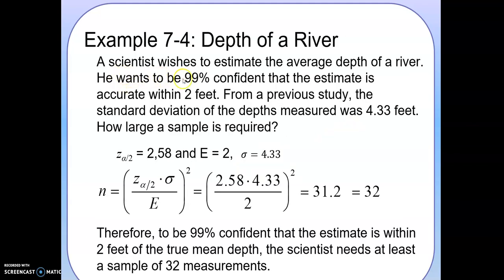Here's the example. The scientist wished to estimate the average depth of a river. He wants to be 99% confident that the estimate is accurate within two feet. So that's E, margin of error, plus minus two feet. From the previous study, the standard deviation of the depth may be 4.33. How large a sample is required? You have Z of 2.58, that's for 99%. E is 2 because you want to be within two feet, and the standard deviation is 4.33. If you just plug this in and do a square, you get 31.2. That's the minimum. You cannot get decimal samples, so you always round this up to the next whole number. Therefore, to be 99% confident that the estimate is within two feet of the true mean depth, the scientist needs to at least take a sample of 32 measurements.